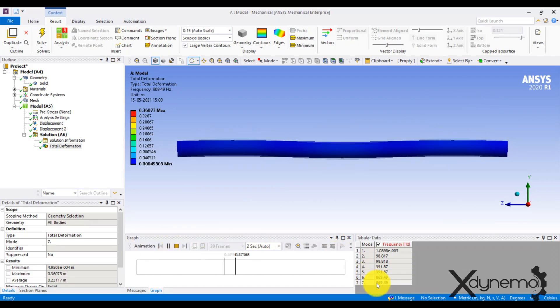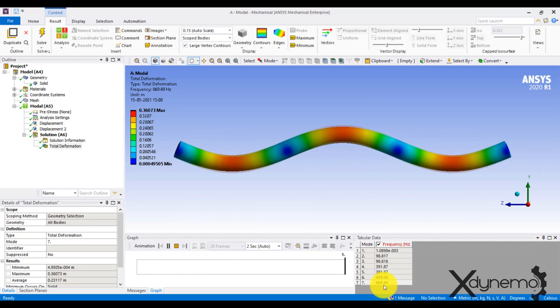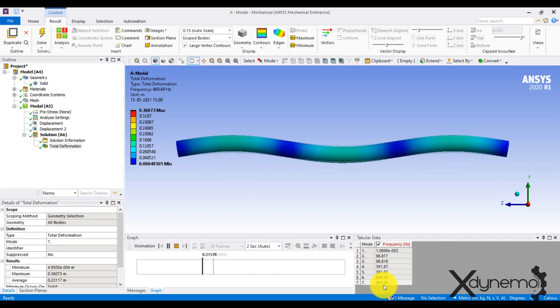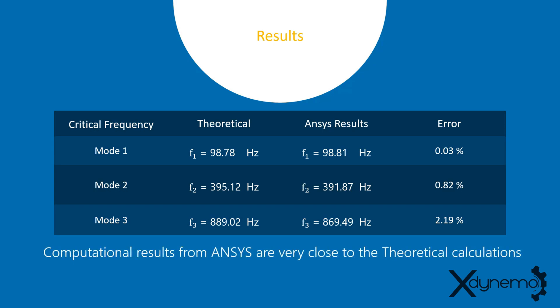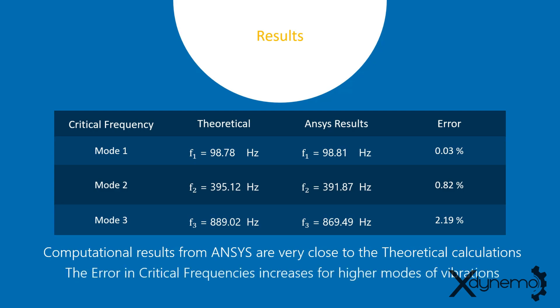We cannot get stress results in modal analysis workbench — only deformation results are available. Let us compare the computational results from ANSYS with theoretical calculations. All the results from this analysis are provided in this table. Mode 1 critical frequency is calculated as 98.78 Hz, whereas the ANSYS result shows 98.81 Hz with an error of 0.03%. Mode 2 and mode 3 results show an error of 0.82% and 2.19% respectively. Computational results from ANSYS are very close to the theoretical calculations. The error in critical frequencies increases for higher modes of vibration.